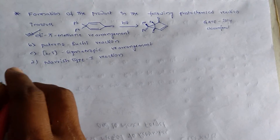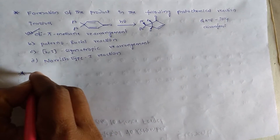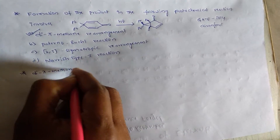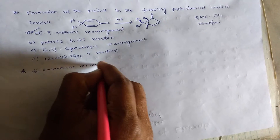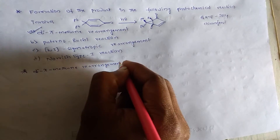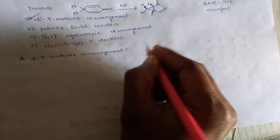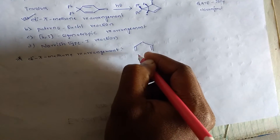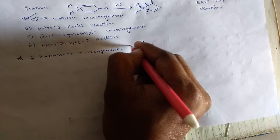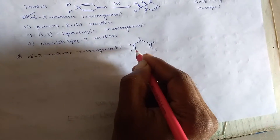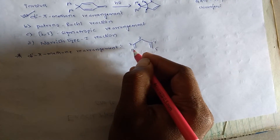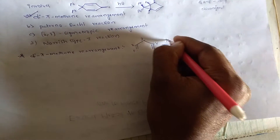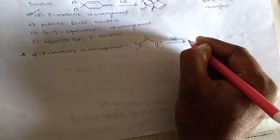We can see now. Di-pi-methane rearrangement. This is the di-pi-methane moiety, where we number the carbons 1, 2, 3, 4, 5 with 2,5-bonds. In photochemical conditions, the free radical mechanism takes place.